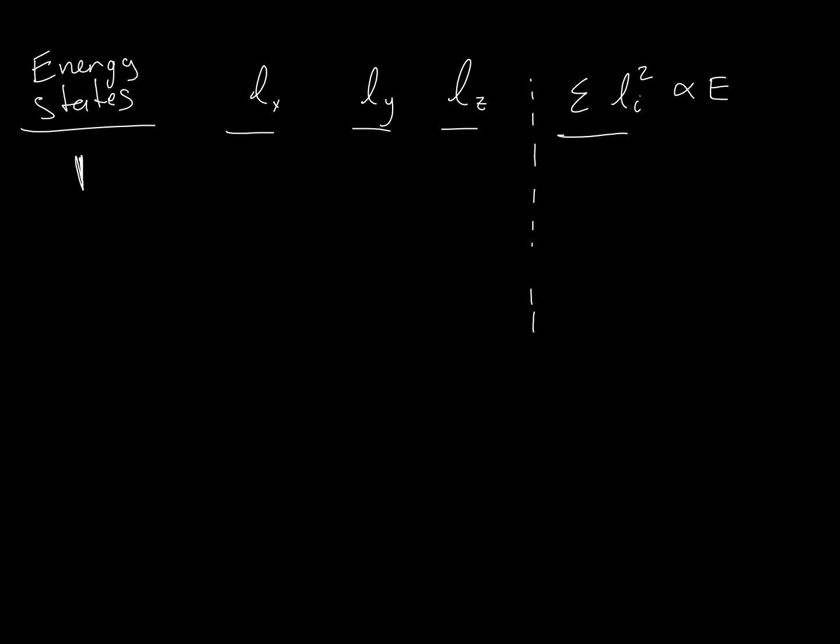This is the same concept as basically a microstate. For every single one of those energy states, it's going to have a unique system property. This summation of the Li squared is as a stand-in—this is proportional to the energy of that system. So one energy state that this microstate can be in is if we were to have a particle that had LX LY and LZ quantum numbers given by 1, 1, and 2.